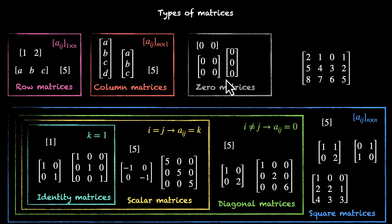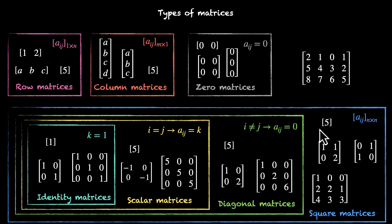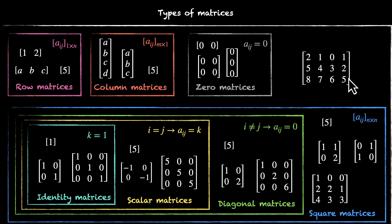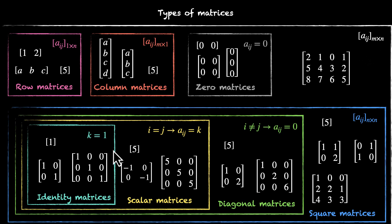For a zero matrix, the condition is simple: all the elements are just zero — no questions asked. These, combined with the generic M by N matrix, are some types of matrices we'll see in the upcoming videos for this chapter.